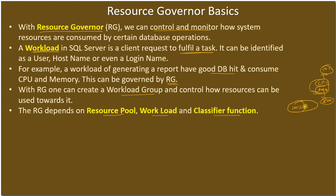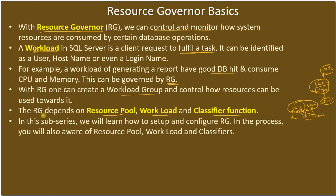There may be multiple workloads that claim CPU and memory from this resource pool. Out of the 500 MB, one workload group may claim 200 MB, another may claim 100 MB, and so on. Resources are allocated from the resource pool to the workloads. In summary, Resource Governor depends on three components: resource pool, workload group, and classifier function.